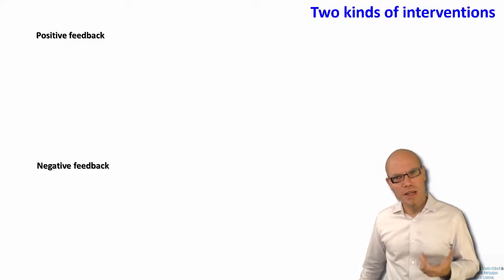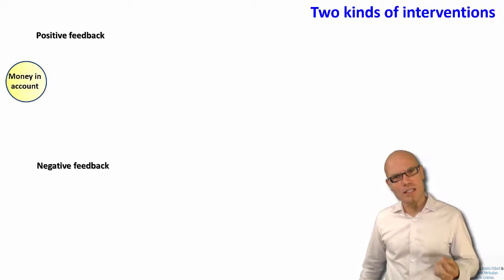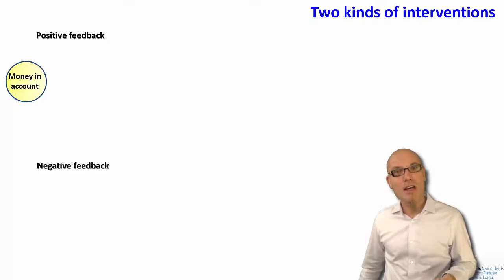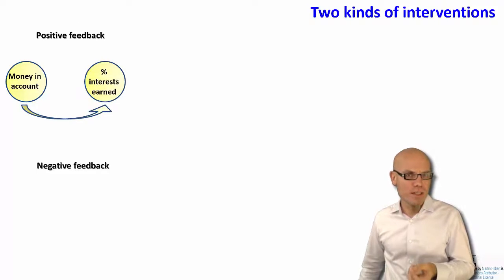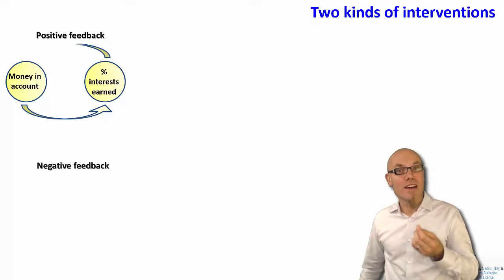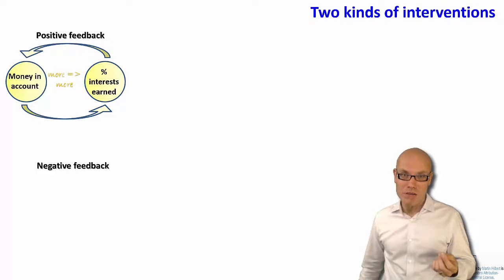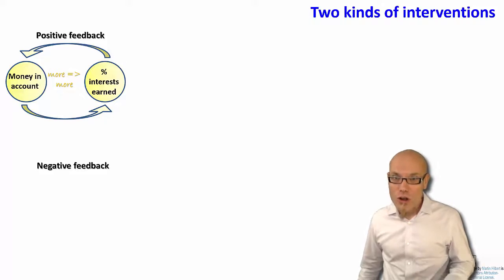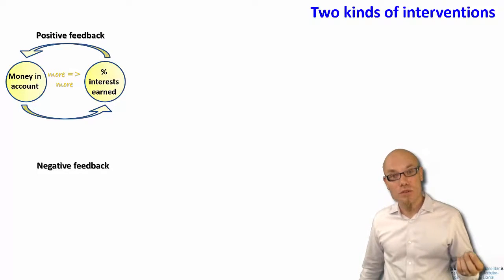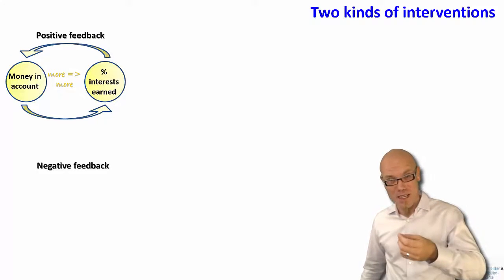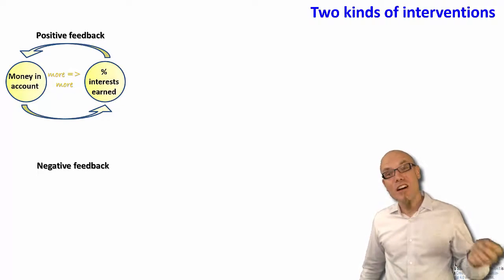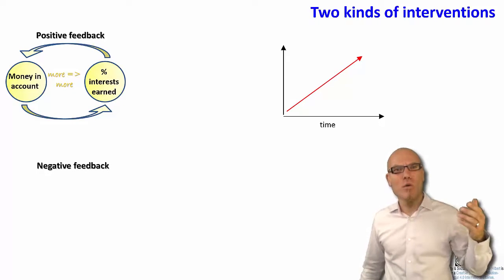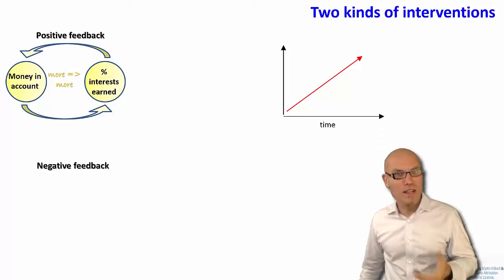One kind of positive feedback follows the logic that if you have money in your bank account and you earn a fixed percentage interest rate, you have more money in your bank account at the end. With more money and a fixed percentage, you earn more interest, and with more interest you have even more money. So the logic here is this positive runaway dynamic — more leads to more leads to more.